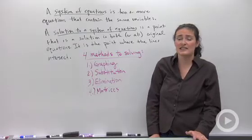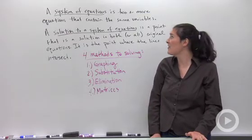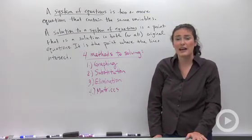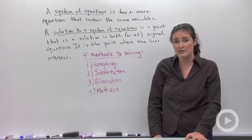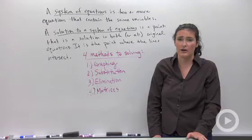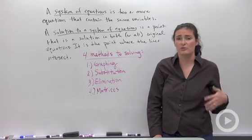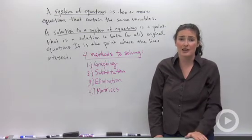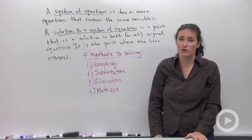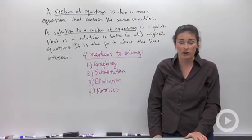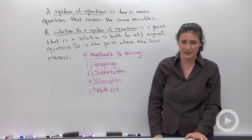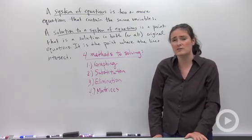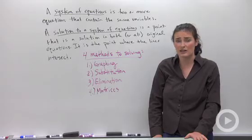A system of equations is two or more equations that contain the same variables. In Algebra class, you'll probably only see two variables that are both raised to the first power. But when you get into Advanced Algebra or Algebra 2, you might start seeing things with x squared, y squared. Sometimes you have three or even four equations, not just x and y, but x, y, z, and w, or something like that. But for Algebra, most of the time we're just talking about two equations that have x and y in both of them.